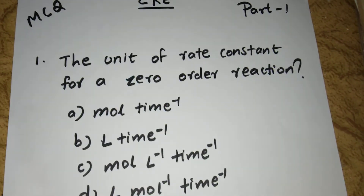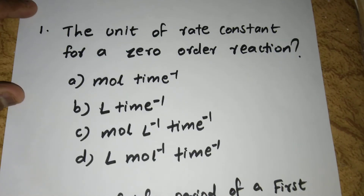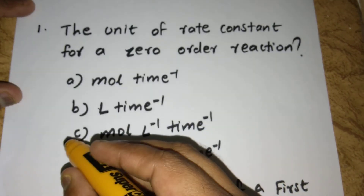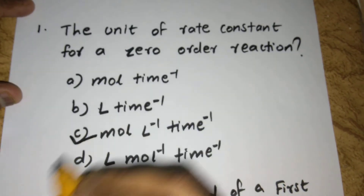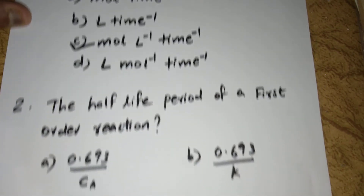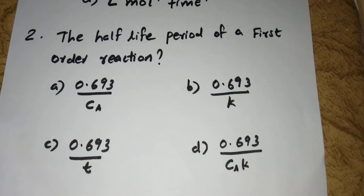The right answer is mol·liter⁻¹·time⁻¹, so C is the right answer. Now look at the second question — it is a very important and frequently asked question in competitive exams.